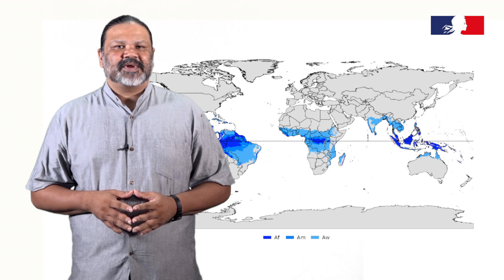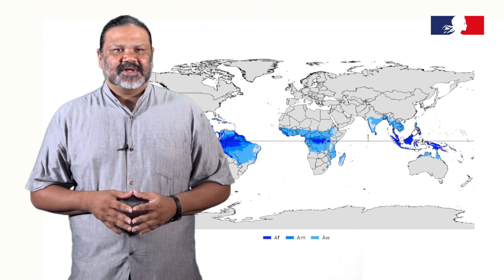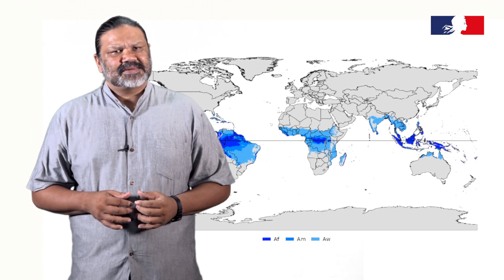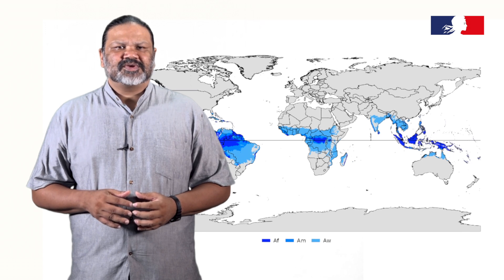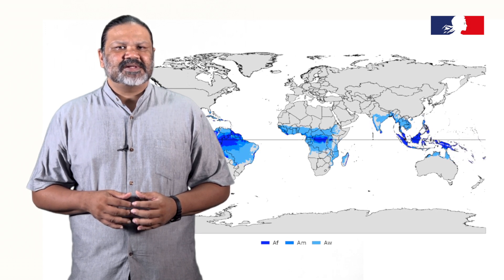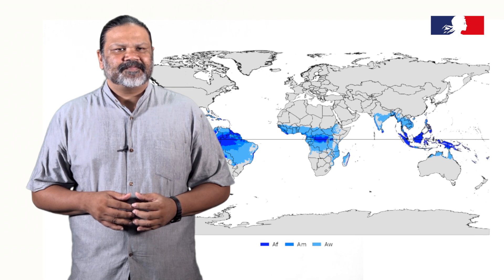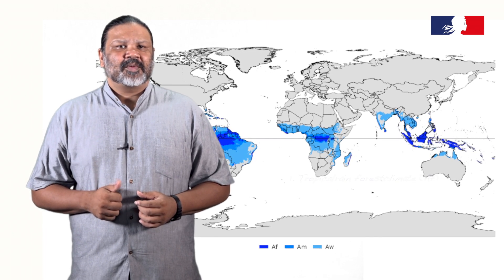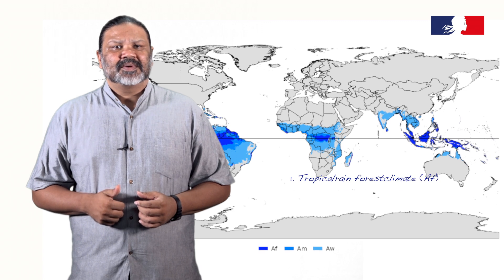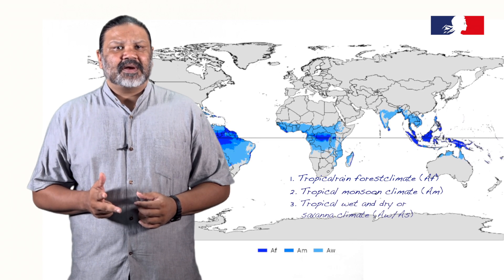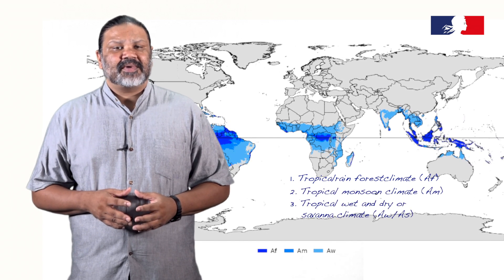Tropical climates are characterized by constant high temperatures, especially at sea level and low elevations. All 12 months of the year have average temperatures of 18 degrees Celsius or higher. There are three basic groups: tropical rainforest climate, tropical monsoon climate, and tropical wet and dry, or savanna climate.